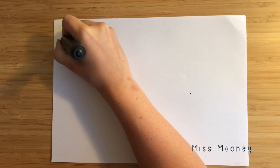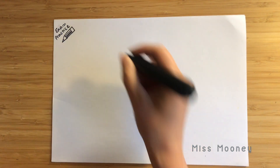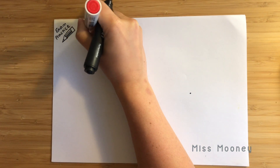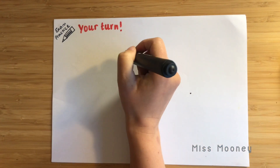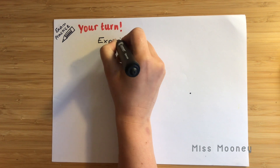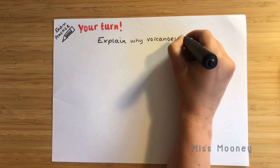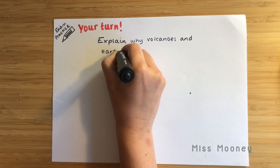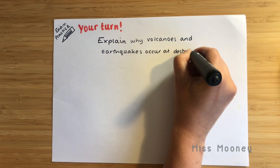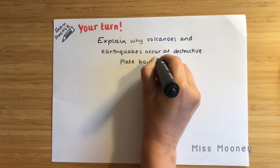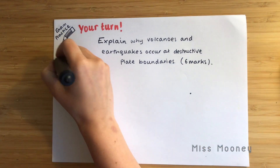Now it is your turn to try a six marker for yourself. It is not going to include figures this time — it's a bit more straightforward, but is a very realistic six mark question you might get in an exam. The question is: explain why volcanoes and earthquakes occur at destructive plate boundaries — six marks. You might get a similar one that also asks you to look at a figure; for that you'd annotate the figure as we did previously. But for this one, it's quite straightforward.